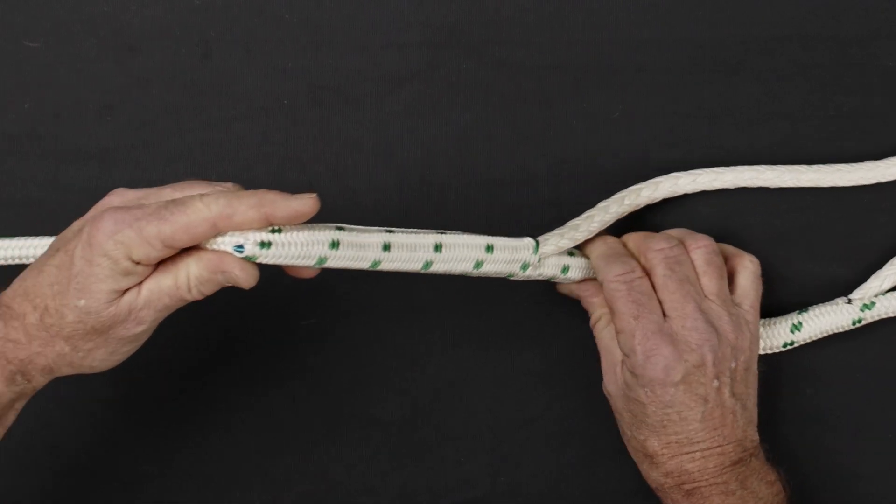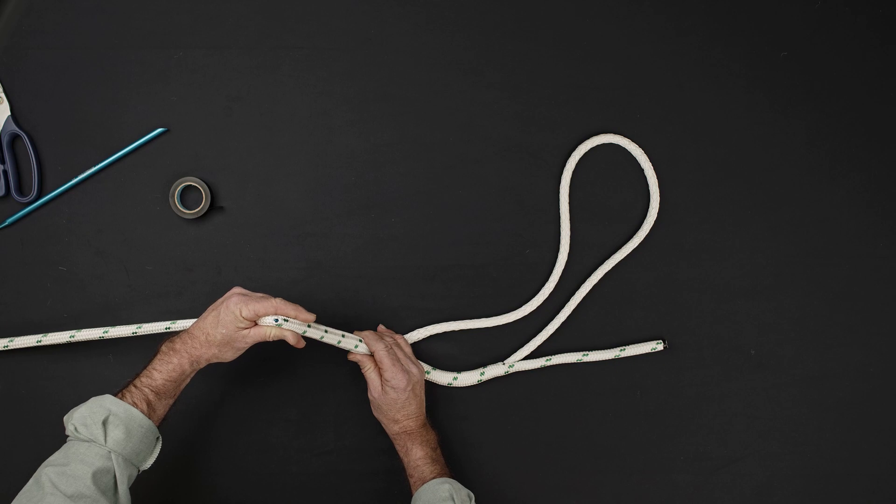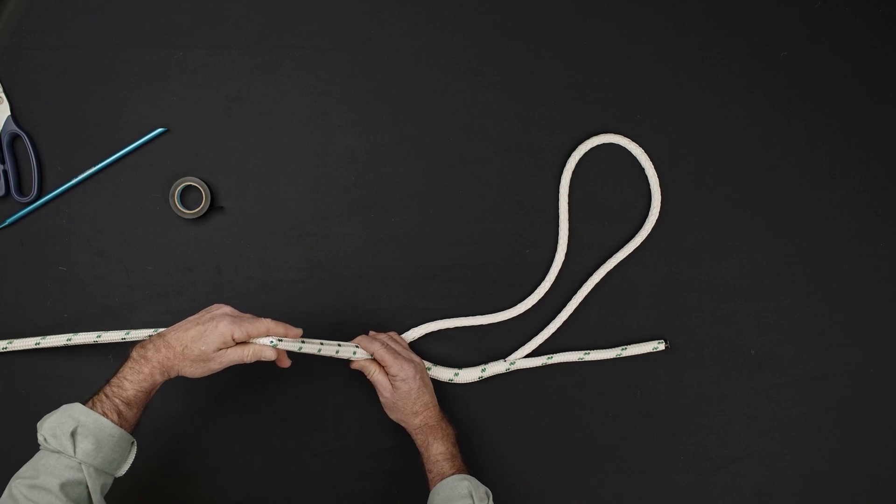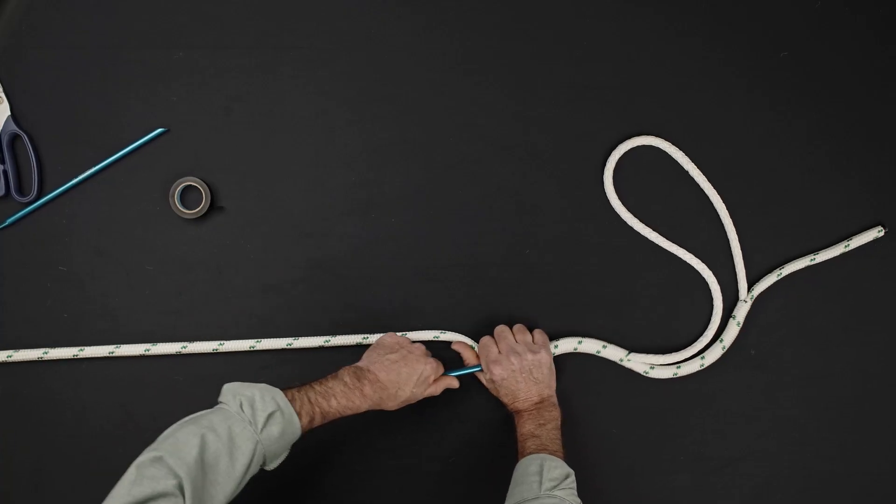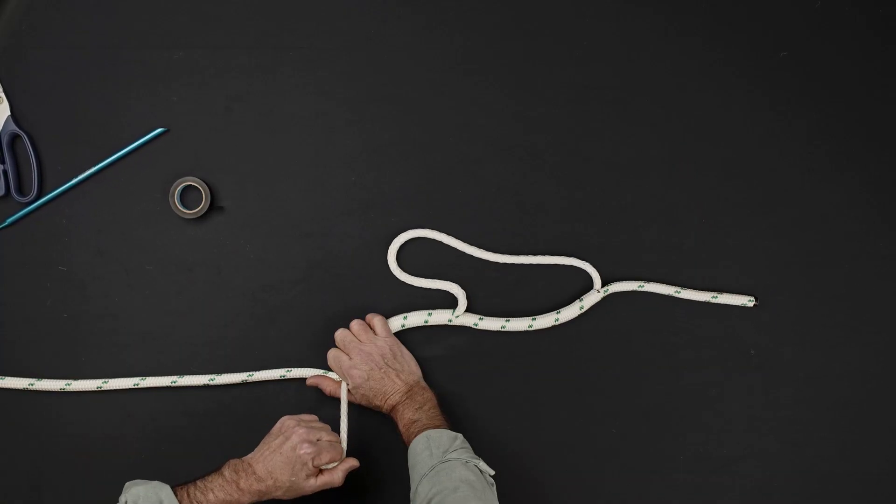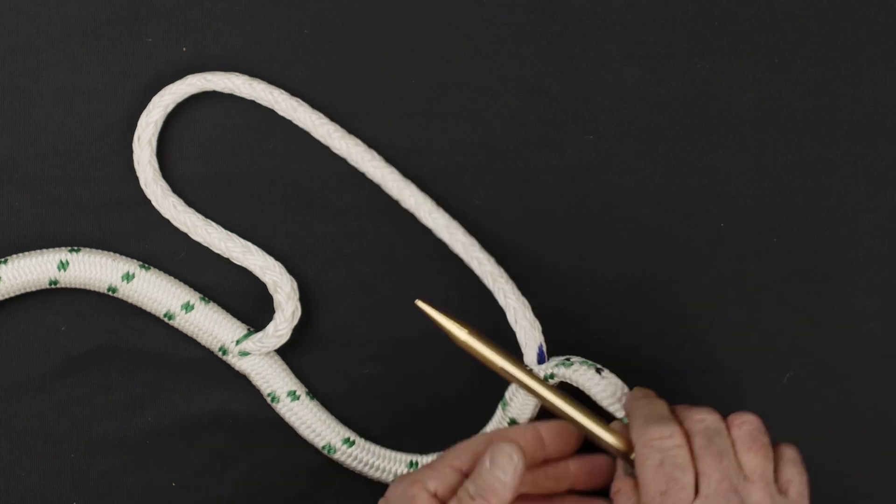Extract the FID from the inside of the rope while being careful not to catch the core and not to split any of the sleeve strands. Carefully pull through the core until the alignment mark is matched up with the location where the core enters the sleeve.